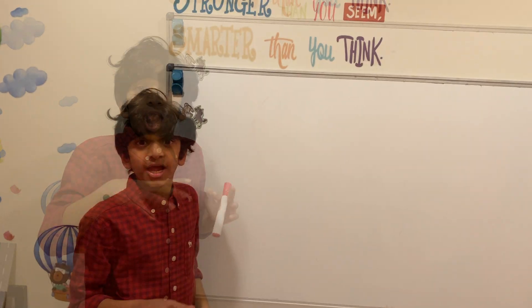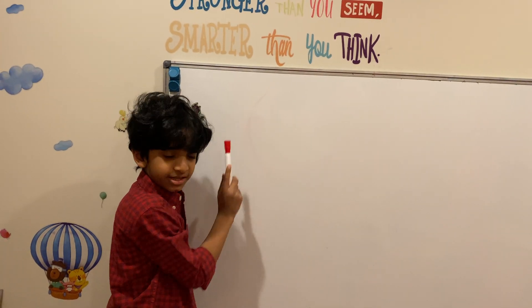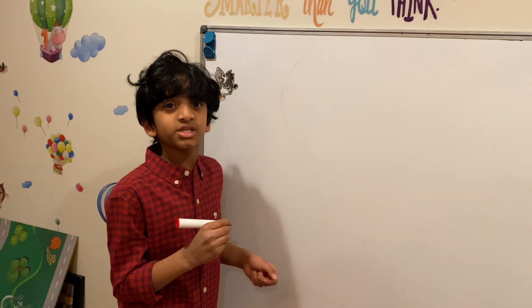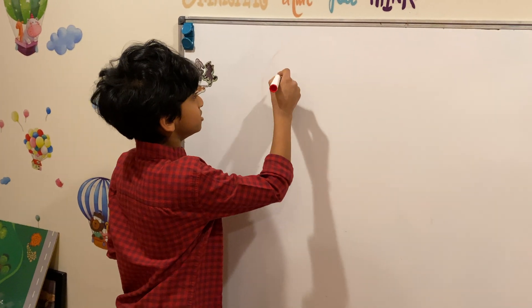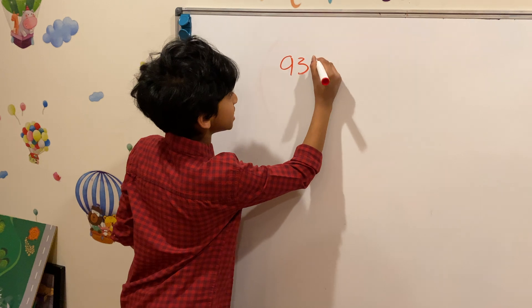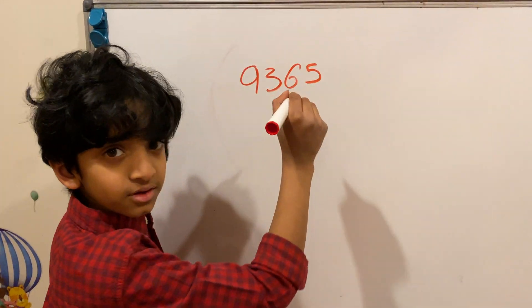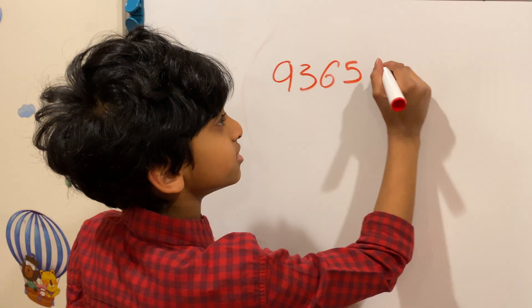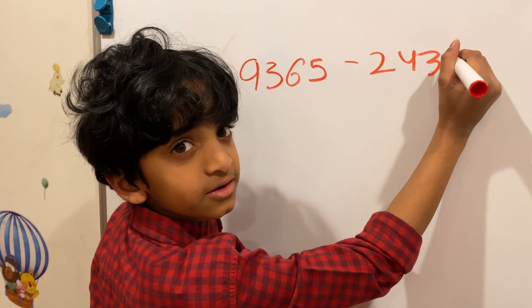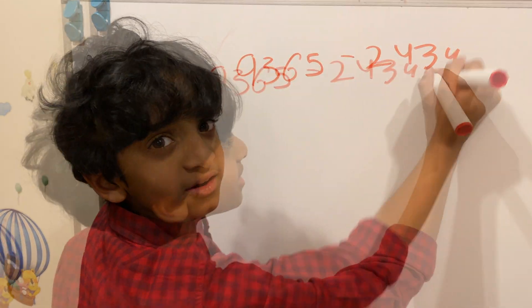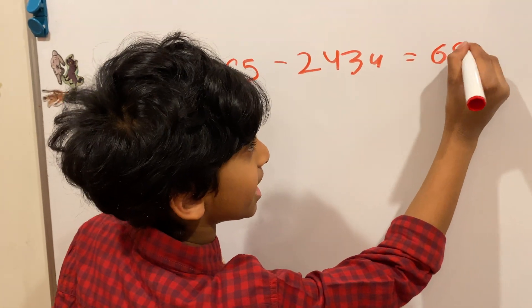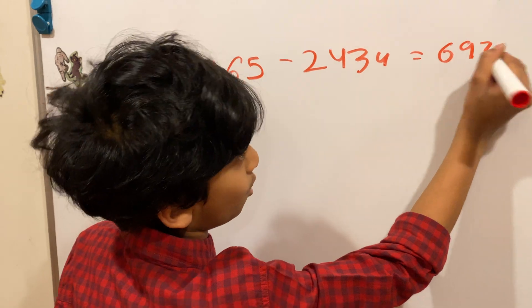Let's do a subtraction example. We have 9365 minus 2434, and the answer is 6931.